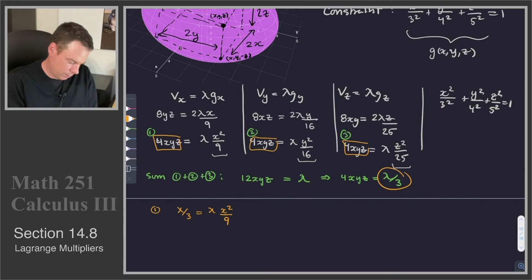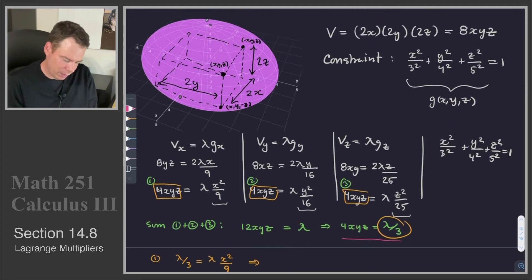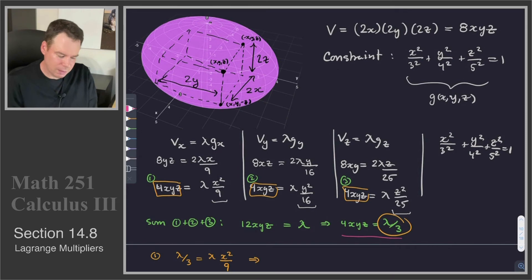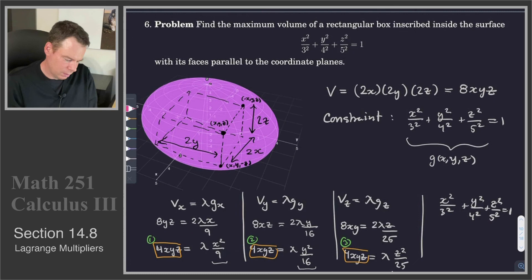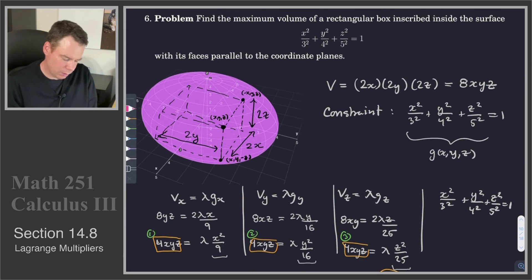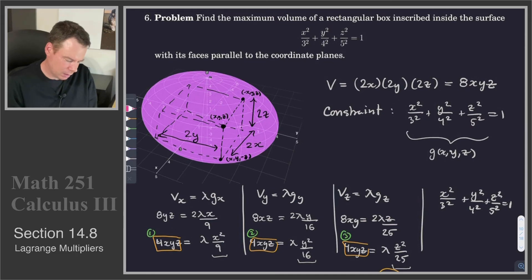So what I get is that my new equation 1 can become λ/3 = λx²/9. And so now we just observe that λ can't be 0, because if λ was 0, then this equation 4xyz = λ/3, if λ was 0, that would mean xyz = 0. But then I scroll up, and I would have my volume, which is 8 times xyz, volume would be 0. And I'm trying to find the maximum volume of a box.